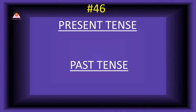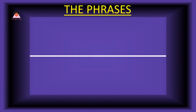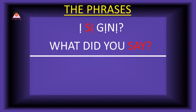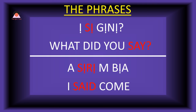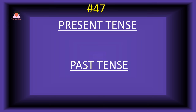Word number forty-six: 'si,' meaning 'say.' The past tense of si is 'sire,' meaning 'said.' Present tense phrase: 'i-se geni' — what did you say? Past tense: 'a-sere n'bia' — I said come.